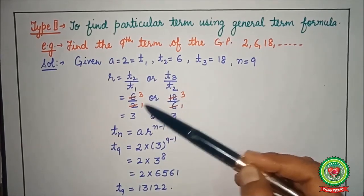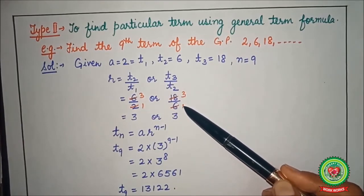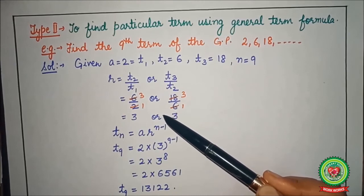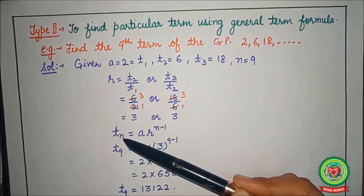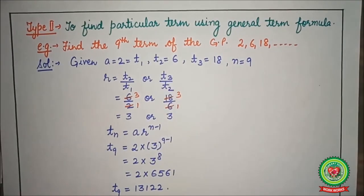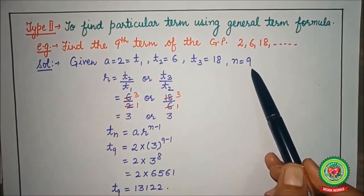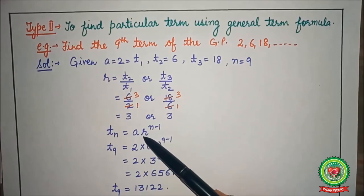Put the values, we get 6 upon 2 or 18 upon 6. After cutting we are getting r is equal to 3. Now we have to find 9th term, so n is equal to 9.